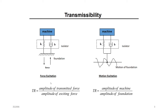We will show you how to get this transmissibility. For motion excitation, it's the opposite: the input is the amplitude of the foundation — the vibration of the floor — and the output is the motion of the machine. We call this also transmissibility. Our job in the next examples is to reduce the transmissibility — make it as low as possible — in order to reduce the transmitted force or transmitted excitation.